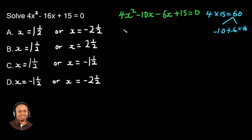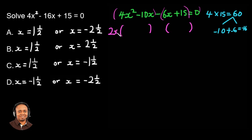So now we can factorize. We're going to look for common factors within the first two terms. What is the common factor? We have 2x. So what are we left with on the bracket? We are left with minus 5.